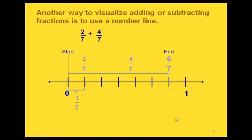Another way to visualize adding or subtracting fractions is to use a number line, just like what we did with adding and subtracting integers. Since our denominator is 7, we're talking about having 7 equal parts from 0 up to 1, so this picture has 7 equal parts. Starting at 0 for 2 sevenths, we go 2 sevenths to the right, then start from there and go another 4 sevenths to the right, and that gets us to our ending point of 6 sevenths.